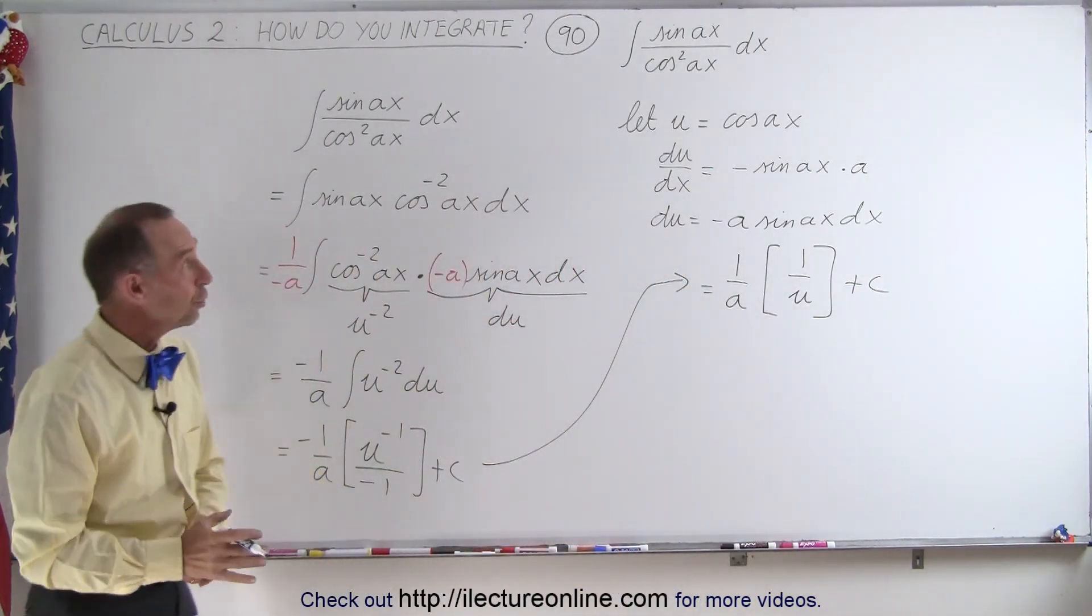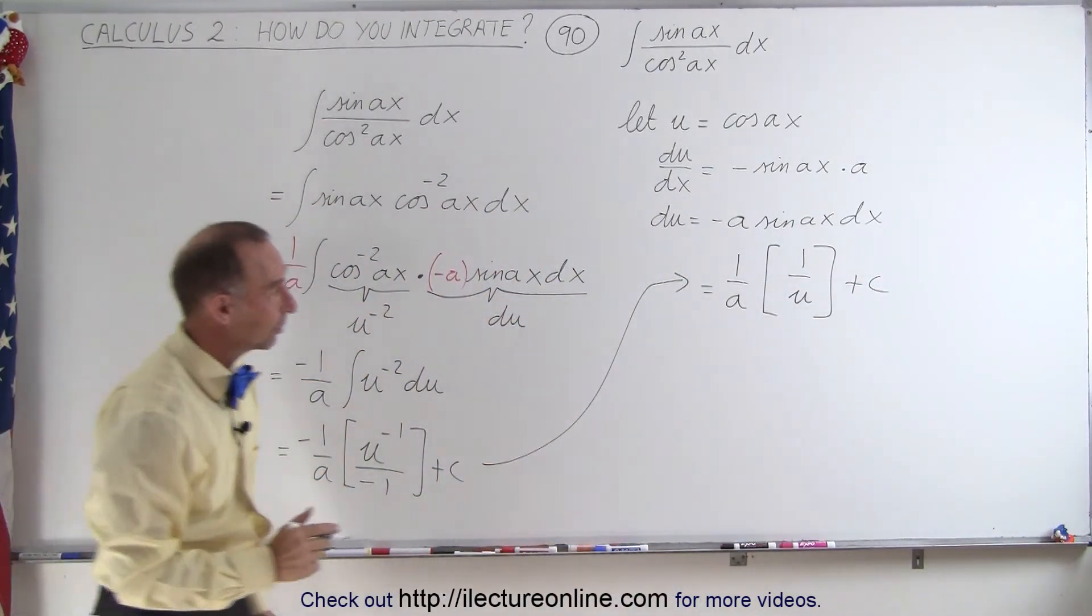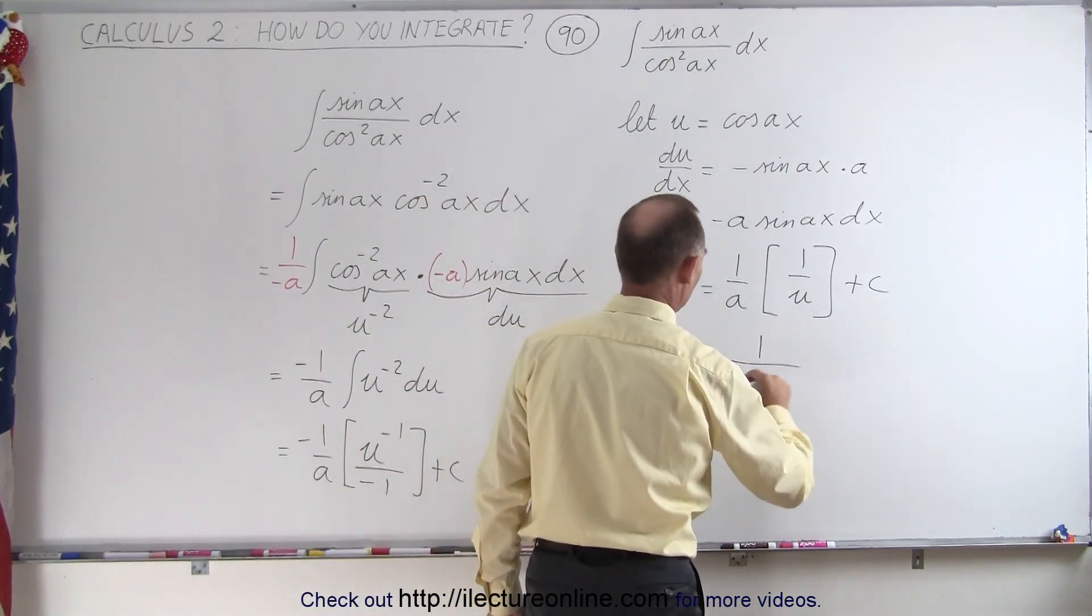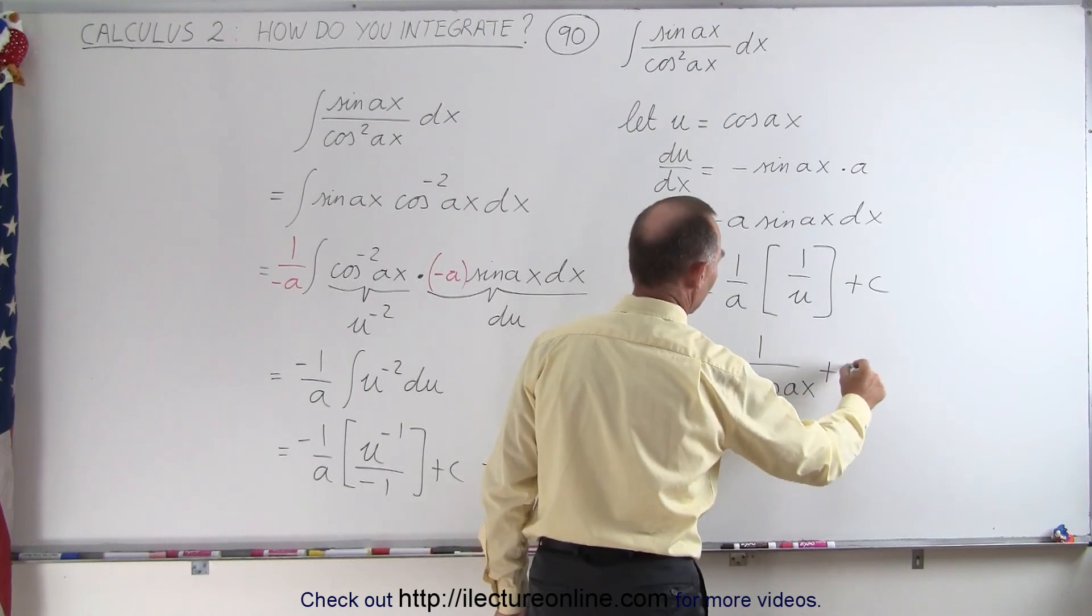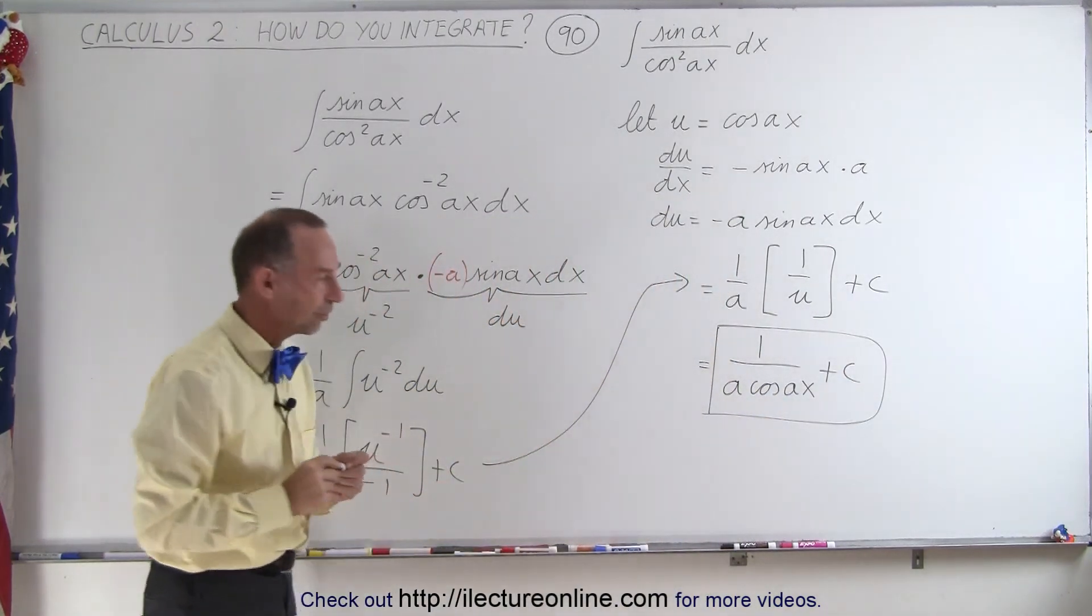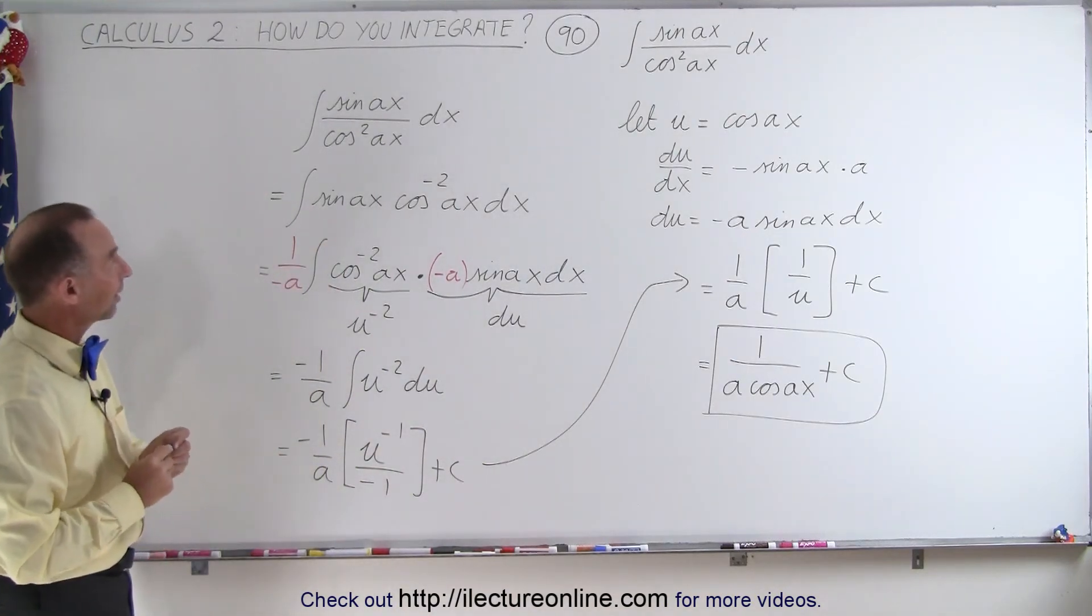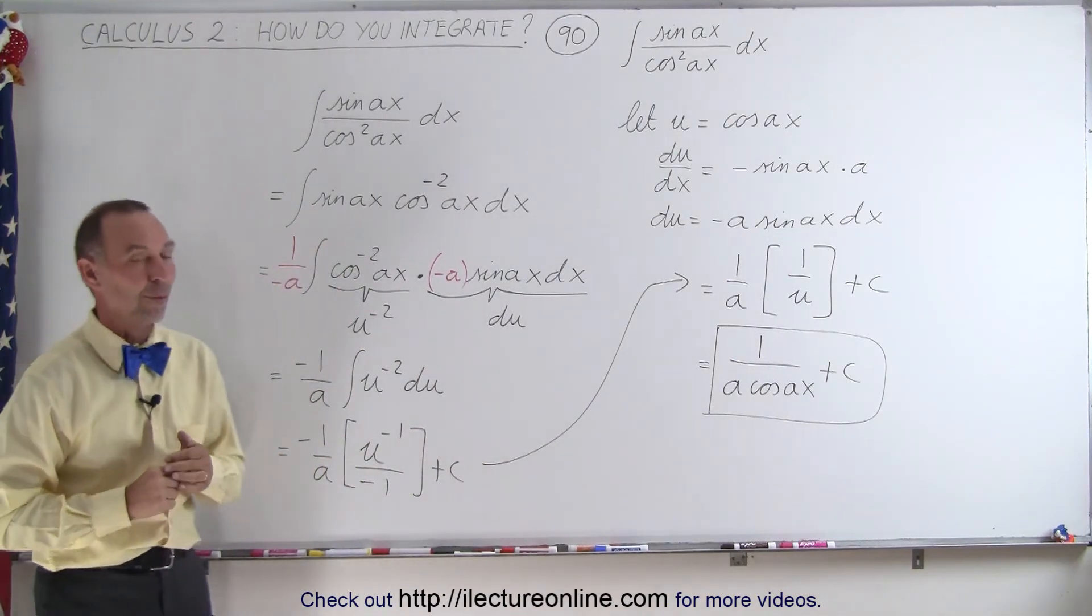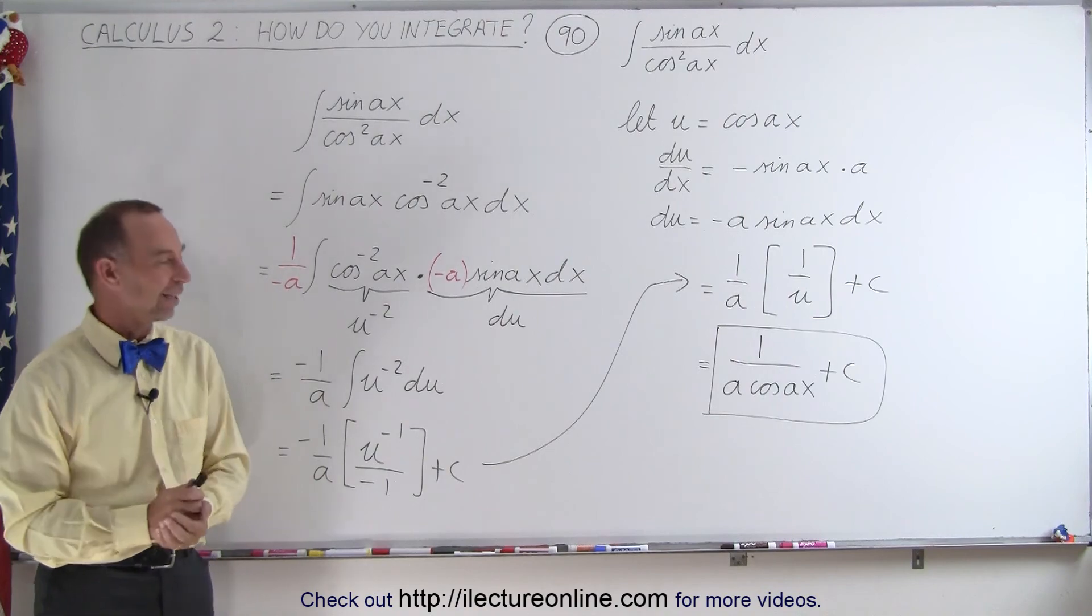Then of course, u was equal to the cosine of Ax, so this becomes equal to one over a times the cosine of Ax, plus a constant of integration, and that then becomes the result of the integral of the sine of Ax divided by the cosine squared of Ax. And that's how it's done.